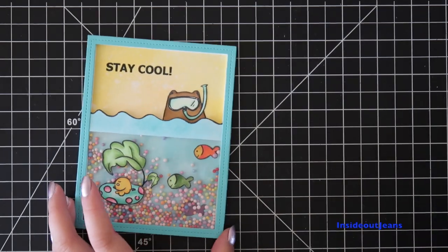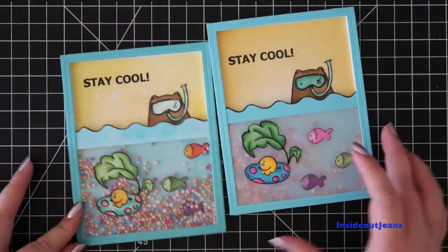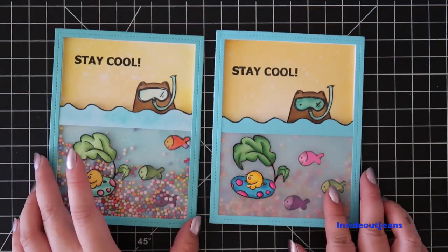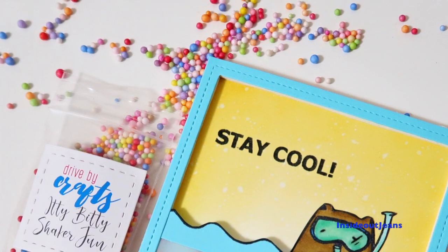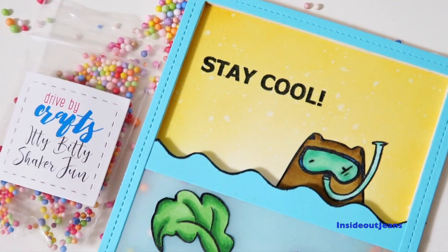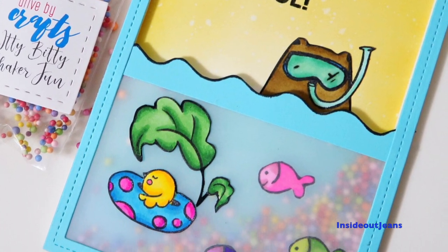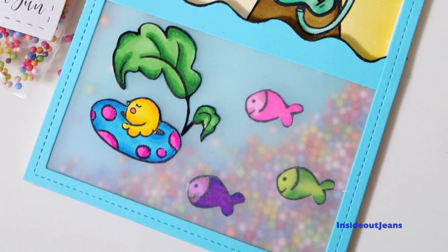When I completed the card, I had a bit of regret because I thought the vellum dulled out the shaker bits. Thankfully, I had stamped out extra so I was able to recreate it using acetate instead of vellum. But I still can't decide which I like better. The vellum lets the images stand out more but the acetate shows off the color of the shaker bits.